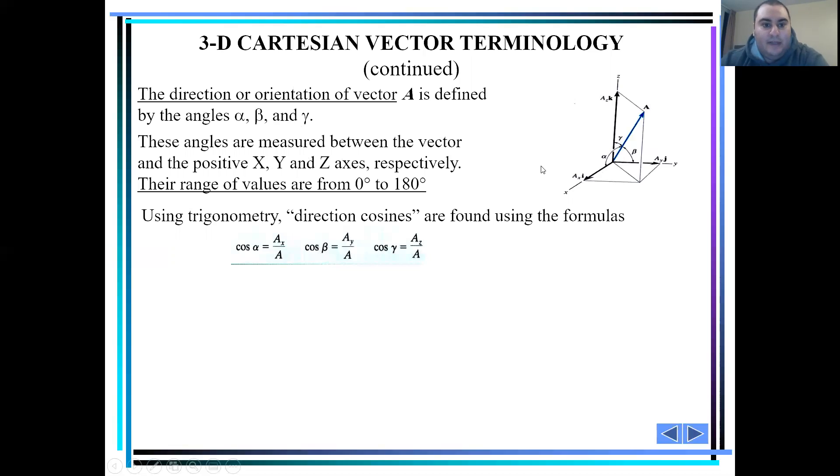Using trigonometry, direction cosines can be found using these formulas: cosine alpha equals ax over A, cosine beta equals ay over A, and cosine gamma equals az over A.